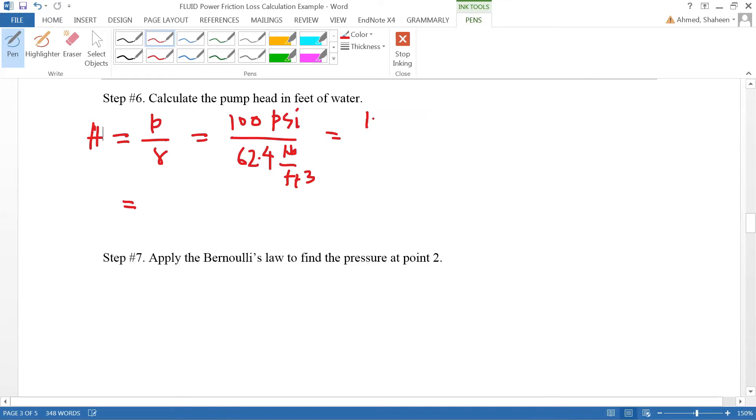So if I just expand all these units, it's going to be psi is pound per square inch. And then I got 1 by 62.4, which is pound per feet cube. So pound goes here, feet cube goes on there. Now this pound pound cancel.